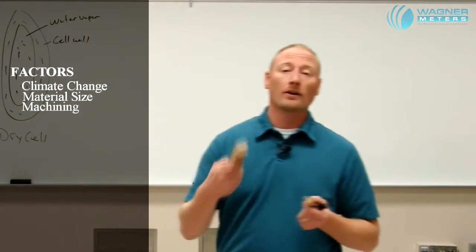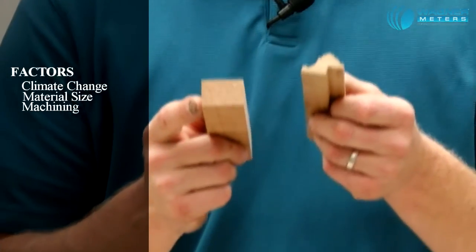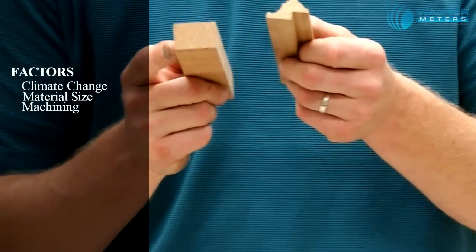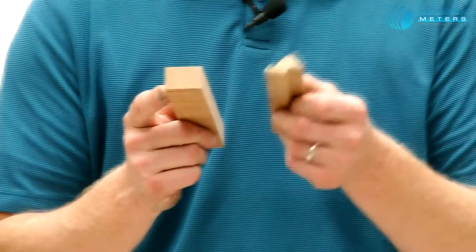Is that material in rough form lumber or is it a machined piece? Machined pieces are going to dry at a much more rapid rate or change that EMC at a much more rapid rate because of the exposed surface area of those parts.